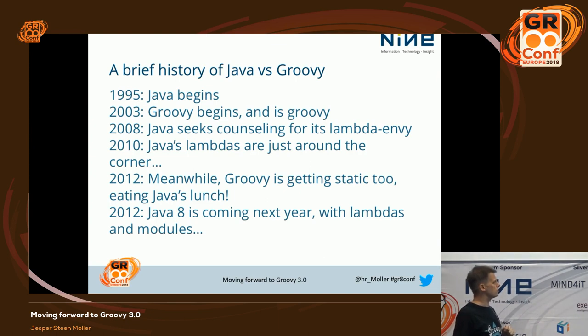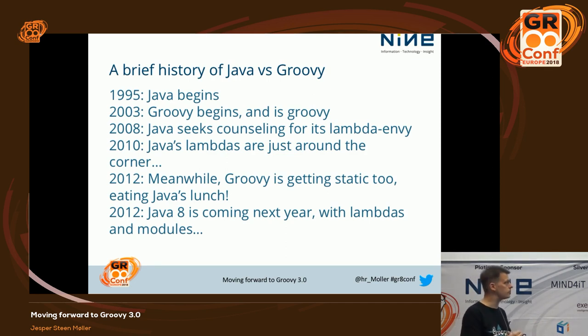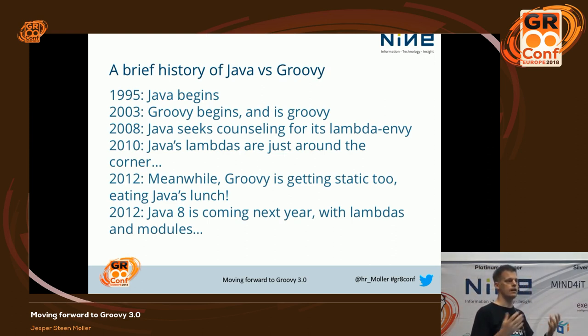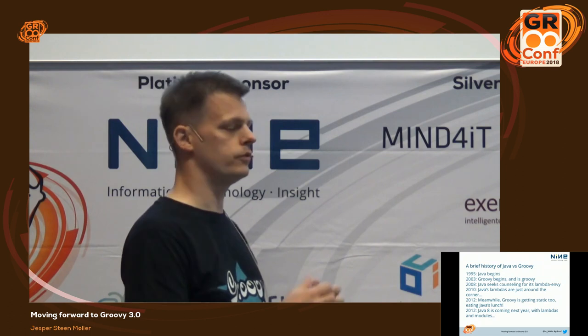Around 2008, Java had been struggling with getting generics out the door and building a huge user community. It was starting to see some counseling for its Lambda envy at the time. At the Java One conference in 2008, they were working on it, and in 2010, Lambdas were supposedly just around the corner. Meanwhile, Groovy was picking up some of the hallmarks of Java, like static compilation, becoming a stronger language and moving into Java's turf.